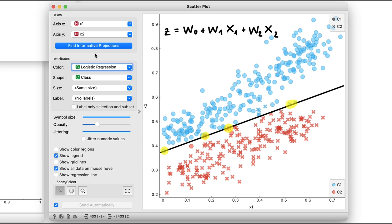Note that data points with a positive z are above the decision boundary. Logistic regression classifies them to c1, the blue class. Those with a negative z are below the decision boundary and are classified as c2.